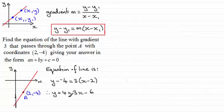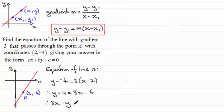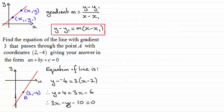We weren't asked to put it in that form — we're asked to put it in the form ax plus by plus c equals 0. So subtract y and subtract 4 from both sides. We're left with 3x minus y, and minus 6 minus another 4 is minus 10, equal to zero. So: 3x minus y minus 10 equals 0. If asked, a equals 3, b equals minus 1, and c equals minus 10.